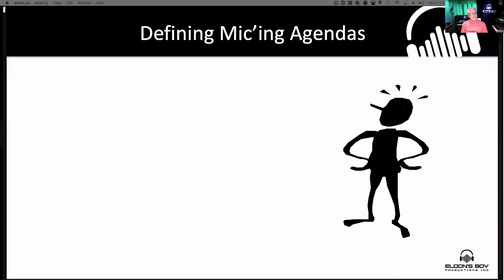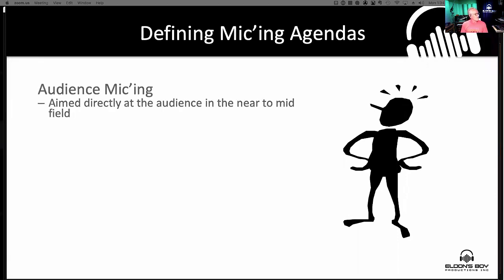We've got to define the micing agendas. That's really one of the most important things you can do right out of the gate — figure out what it is you're actually trying to do with these microphones. For audience microphones, they're usually going to be aimed directly at the audience in the near to midfield. For rock and roll, we usually see them up around the stage pointing out at the audience.